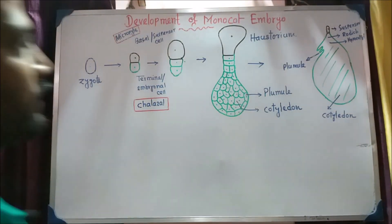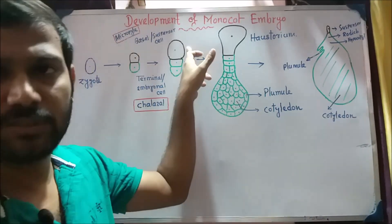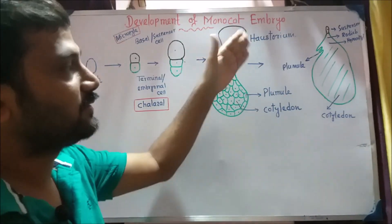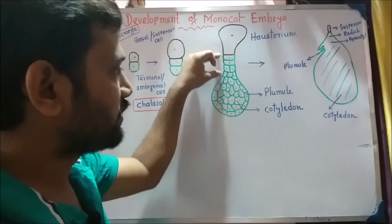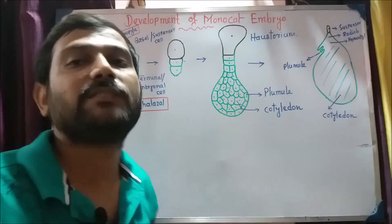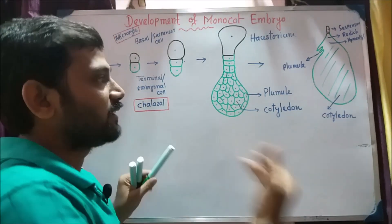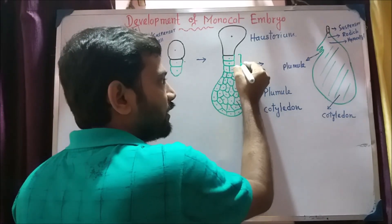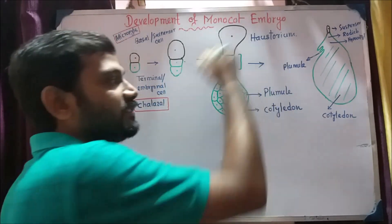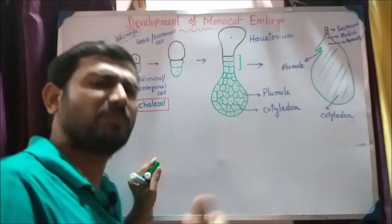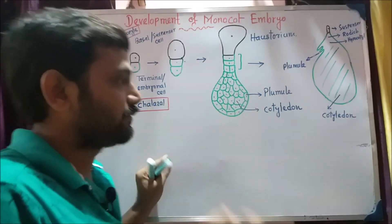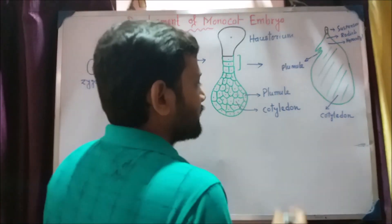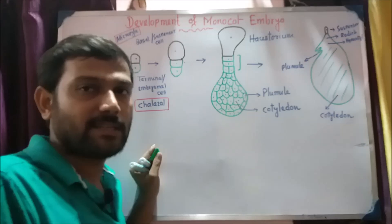We look at this and we see that the new cell has been formed. We can see a suspensor cell. We can also have further division. If you want to divide the cell, you can divide the cell — transverse, vertical, periclinal divisions of the cell.